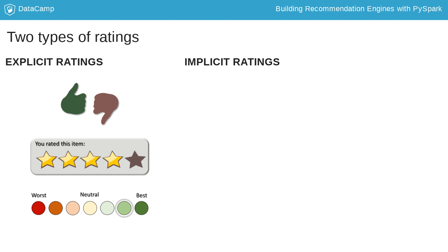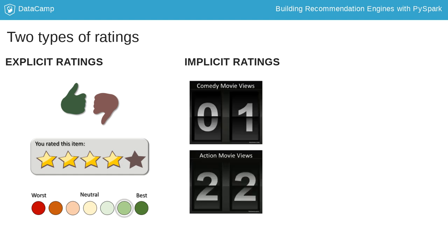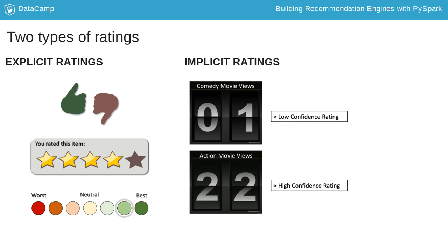For example, if you watch 30 movies, and of those 30 movies, 22 are action movies and only one is a comedy, the low number of comedy views will be converted into low confidence that you like comedies, and the high number of action movies will be converted into a high confidence that you like action movies. These confidence scores are then used as ratings.